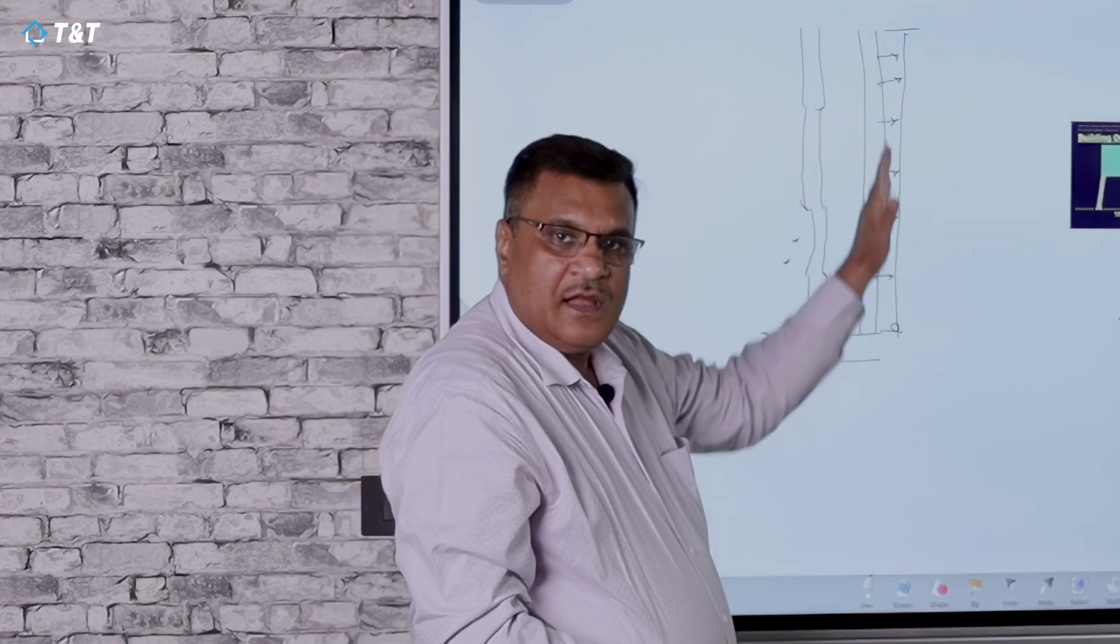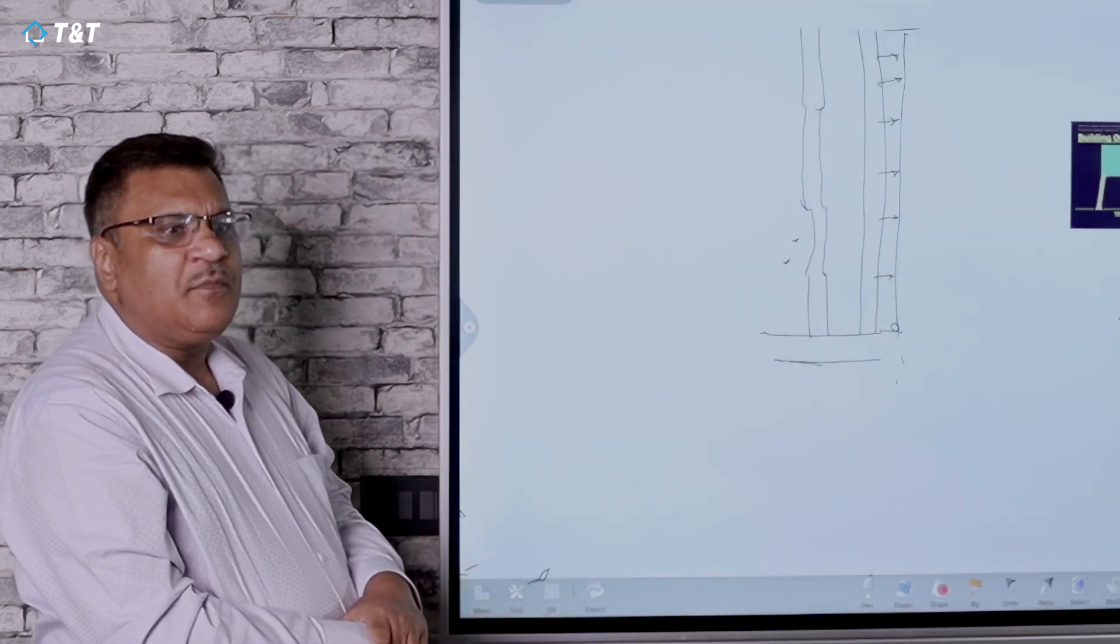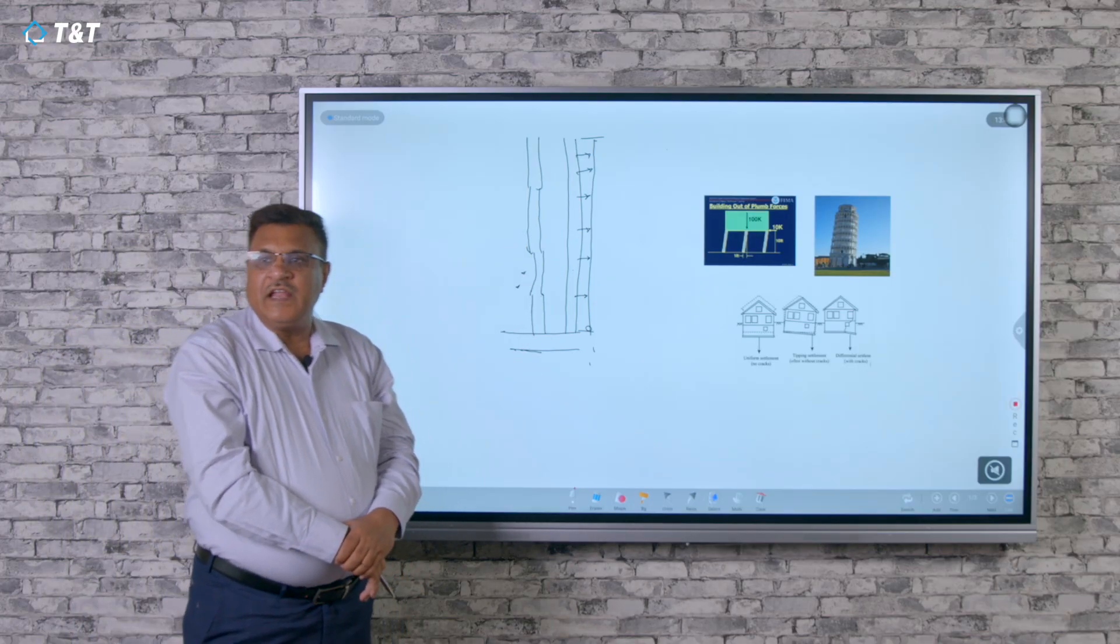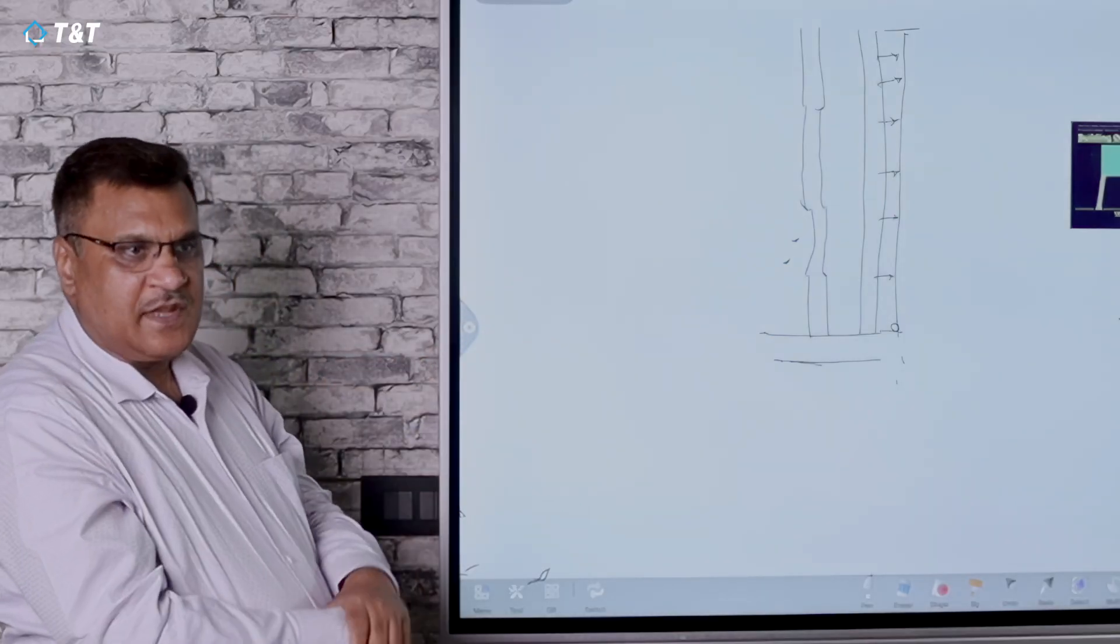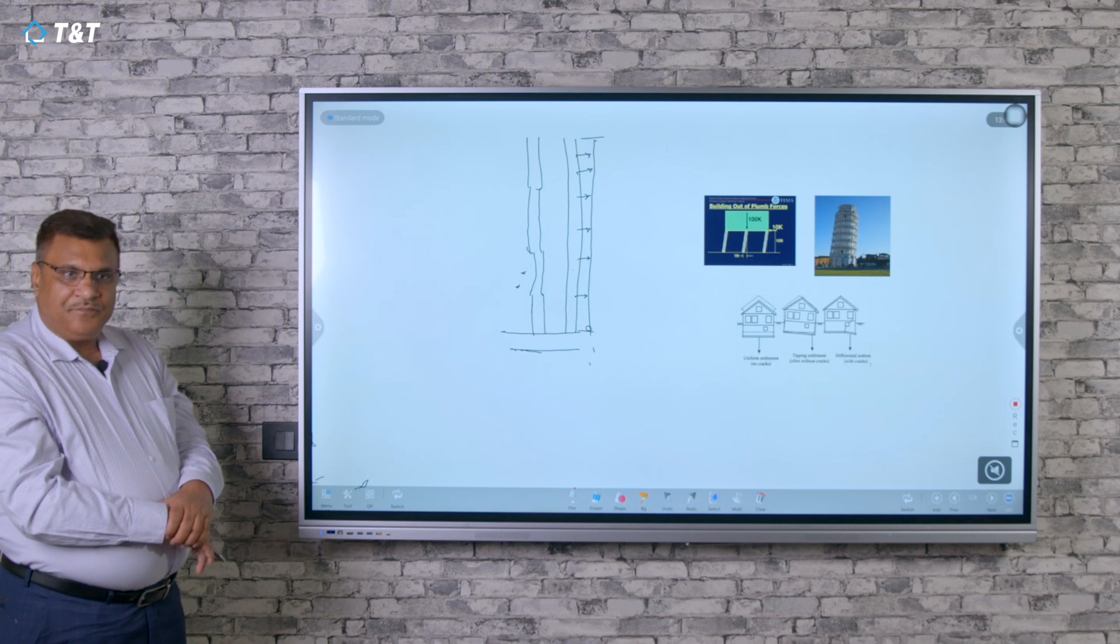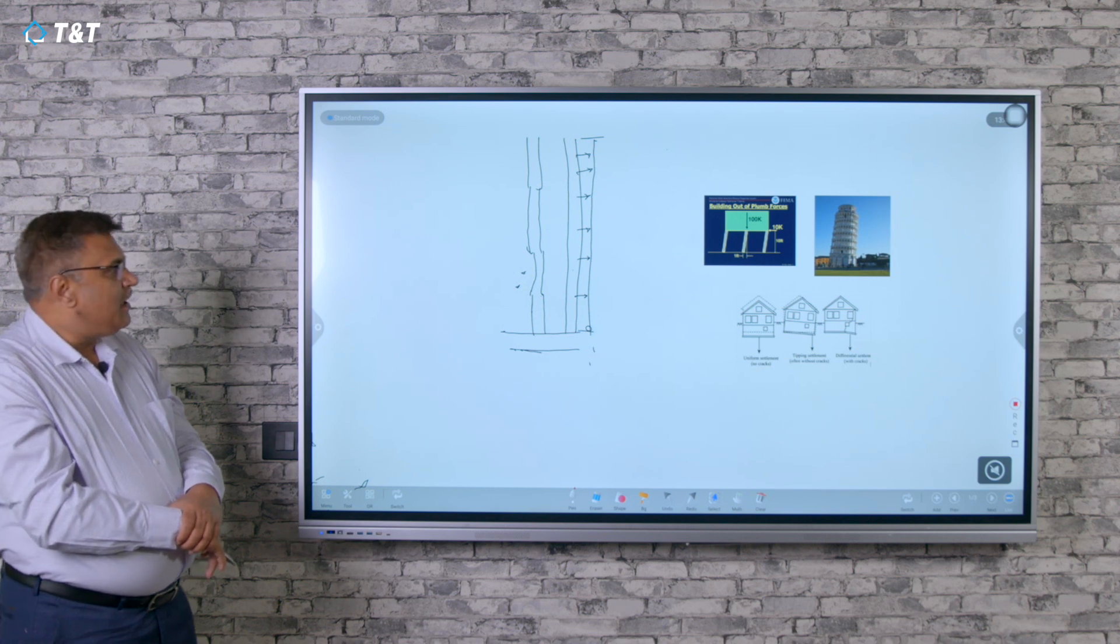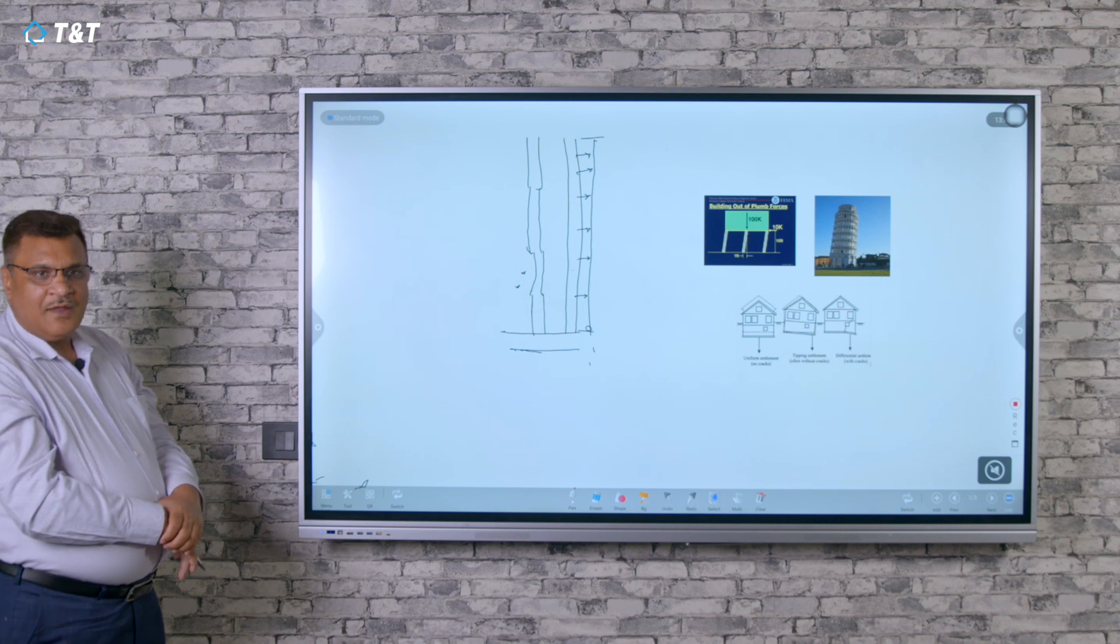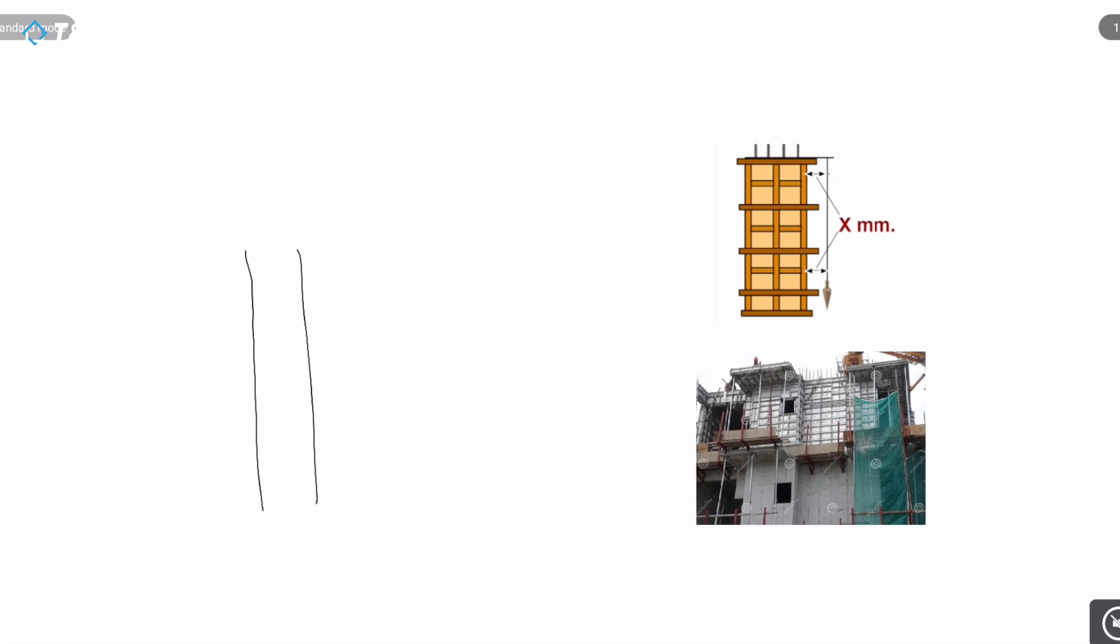How much tolerance is there? Maximum, it should not go beyond 20 to 25 mm throughout the height of the building. If any level goes more, it is notified to the structural engineer. Based on instructions, we either demolish that portion of the structure and rebuild it, and ensure all next level efforts so it doesn't occur again. We never allow a non-vertical column to be built.